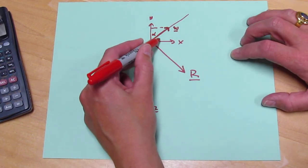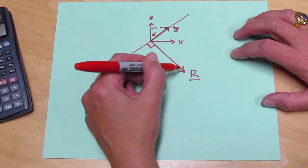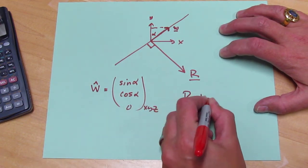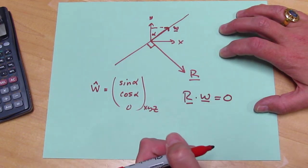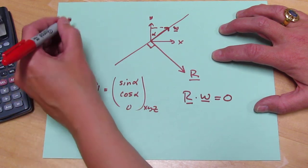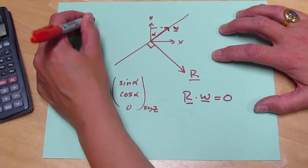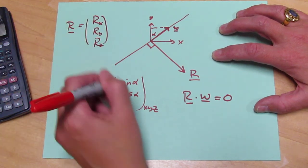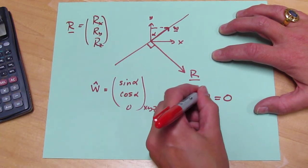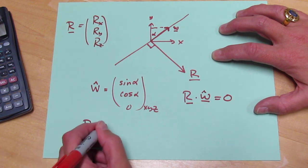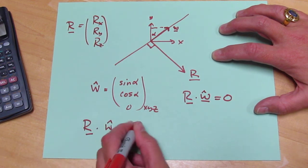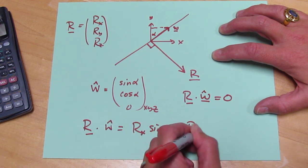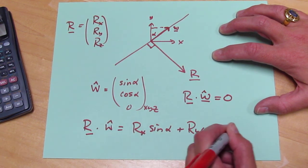And now I want to add the constraint that this vector R must be perpendicular to W, and so R dot W must be zero. Well, since R is Rx, Ry, Rz, when I dot these two vectors, I get Rx sine alpha plus Ry cosine alpha is equal to zero.